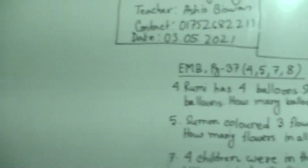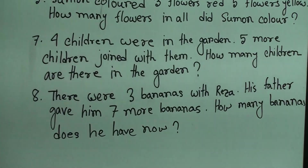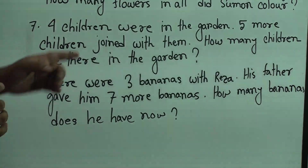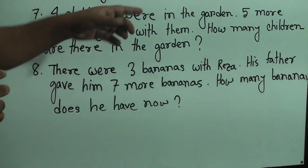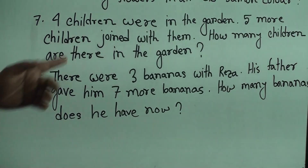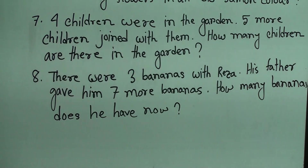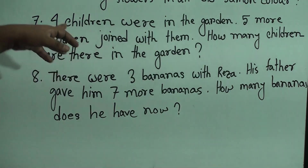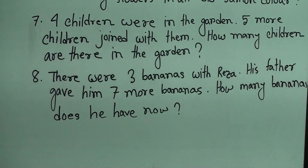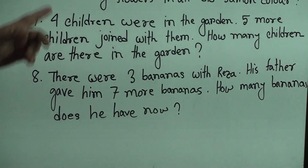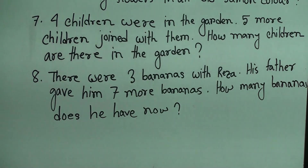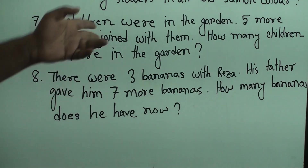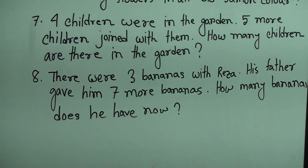Next we shall solve question number 7. Dear students, please notice — at first we read the question. 4 children were in the garden. 5 more children joined with them. So how many children are there in the garden? I repeat: 4 children were in the garden, and 5 more children joined. Now we find out the total amount, so we do addition and get the answer.